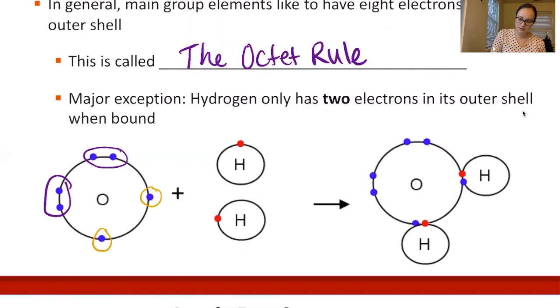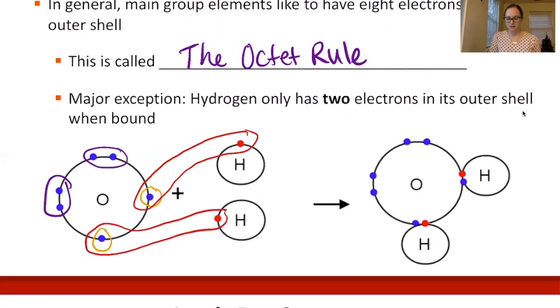This unpaired electron is going to pair up with one of the hydrogen electrons, and the other hydrogen pairs up with the other unpaired electron. We form bonds here. These two electrons show that we are sharing one electron from each atom to form two covalent bonds to oxygen.